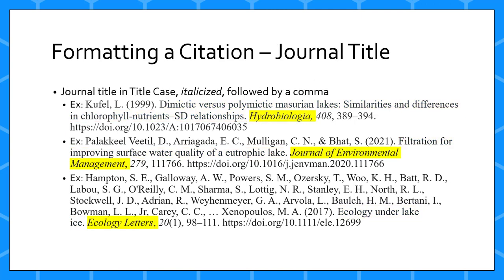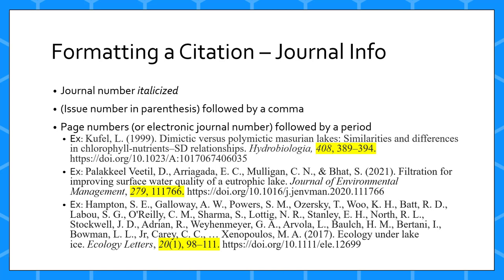Add the title of the journal that published the article. The journal title should be italicized and in title case, meaning the first and all words with more than three letters are capitalized. The journal title is followed by a comma and a space. Next, list the journal volume number, which is also italicized. The journal issue number goes after the volume number in parentheses and is not italicized. The issue number, or volume number if there is no issue number, is followed by a comma and then the page numbers, which have a period after them.